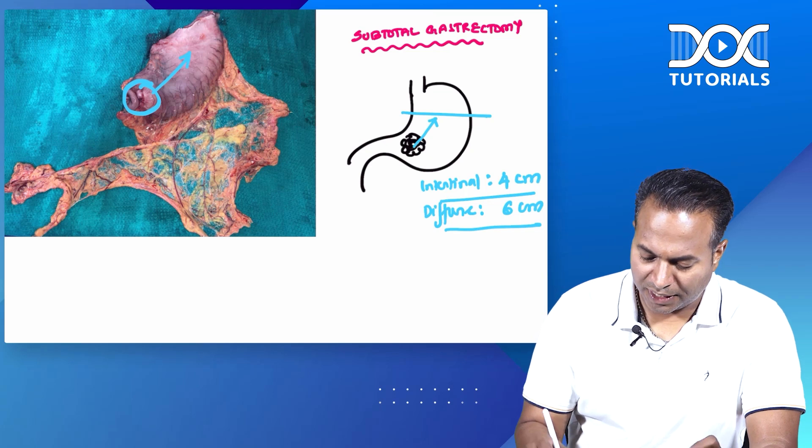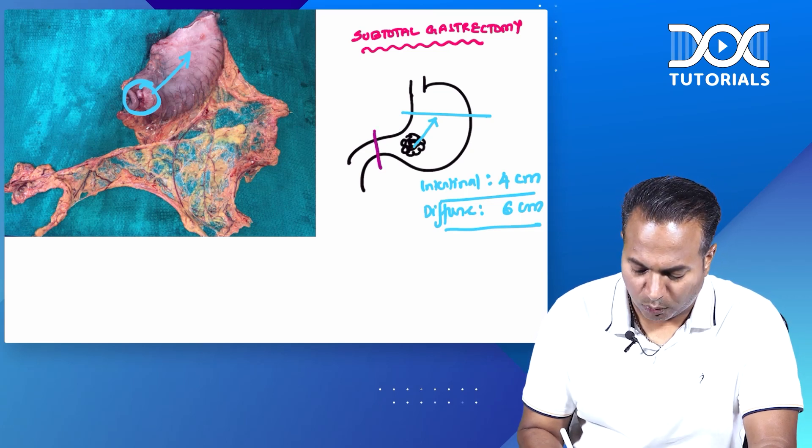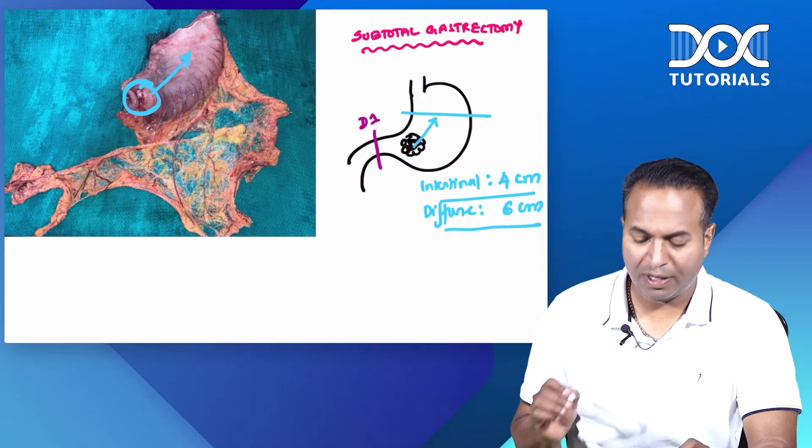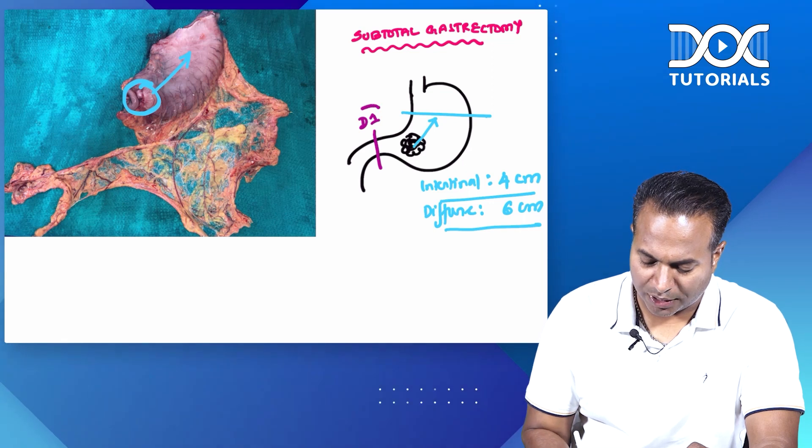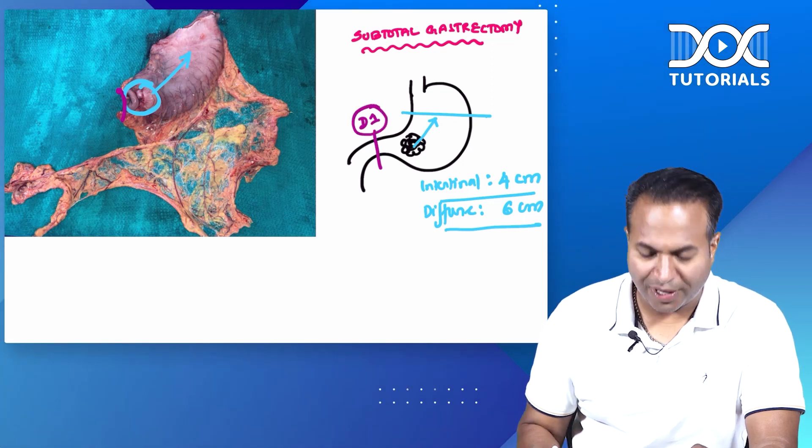Second question: where will you cut distally? Distally, it is cut at D1 level. D1 is the place where you should cut the stomach. You can see here at D1, distal to the pylorus, we have cut.